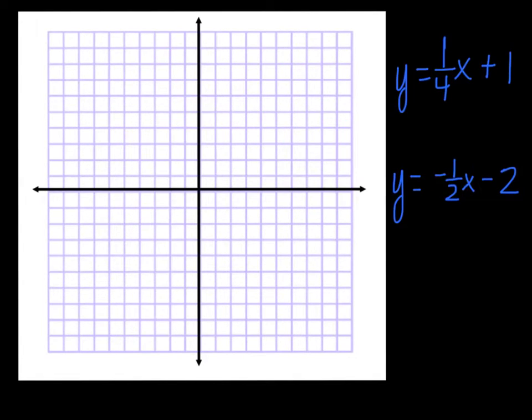I have two equations here — that's called the system of equations when you have more than one. I want to know: if I graph those two lines, where will they cross? I'm going to start by graphing the first one.